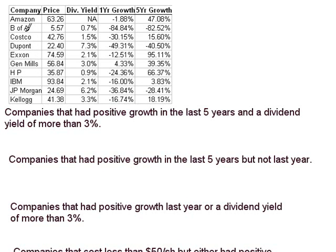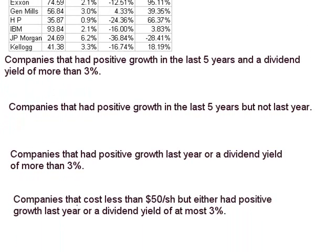It gives financial information. You can think of these elements just like we did before from 1 to 10, but now these are companies called A, B, C, D, E, and so forth. I have price information, a share of stock, what their dividend yields are, one year and five years growth. Typically if you have information like this, you would want to ask some questions about these. I want to focus on these questions first.